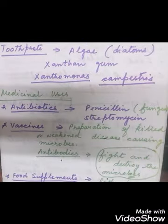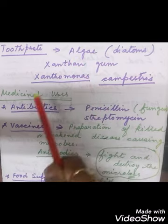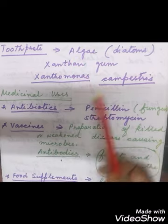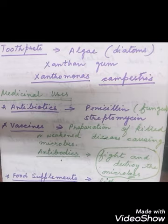Bacteria are also used for making vinegar, tea, coffee, and tobacco, as these need processing in which bacteria can be used. For making toothpaste, a type of algae called diatoms can be used, and xanthan gum obtained from the bacteria Xanthomonas campestris is also used in toothpaste production.